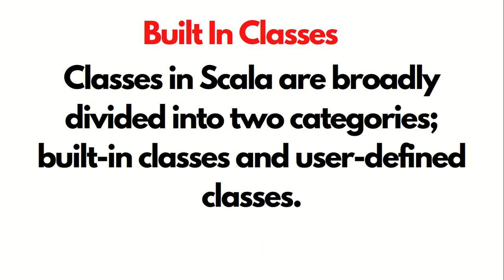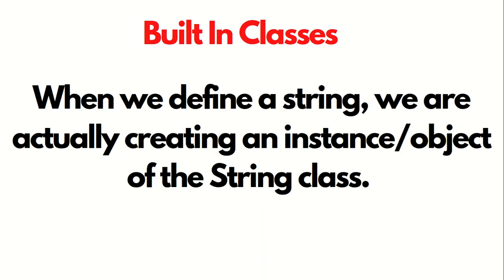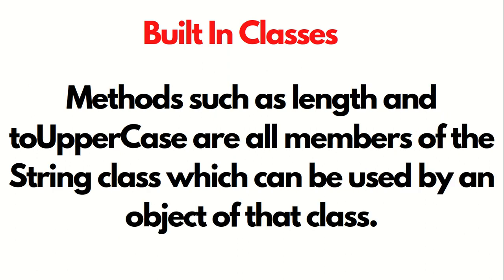In Scala, we have two categories: built-in classes and user-defined classes. When we define a string — as I've already shown in a previous video, which you can check out in my Scala playlist — we are actually creating an instance or object of the string class. Methods such as length and toUpperCase are all members of the string class, which can be used by an object of that class.